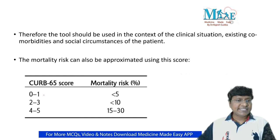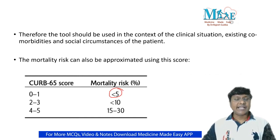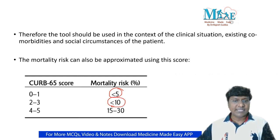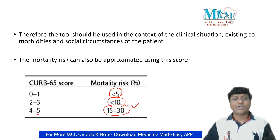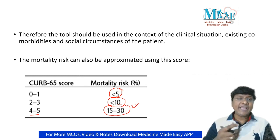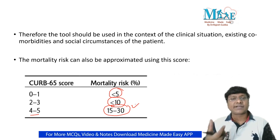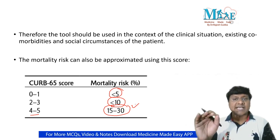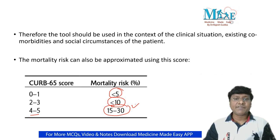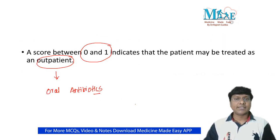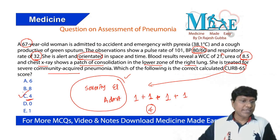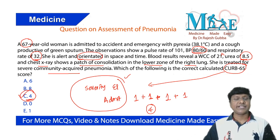Regarding mortality: if the score is 0 to 1, mortality is less than 5%. If the score is 2 to 3, mortality is less than 10%. If the score is 4 to 5, the chance of mortality is around 30 to 50%. However, CURB-65 cannot be used as 100% definitive — it only predicts the outcome. Going back to the question, the answer is 4, and this patient must be admitted to the ICU and given intravenous or parenteral antibiotics.